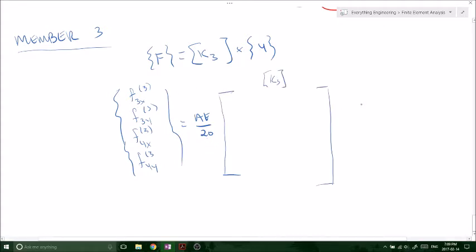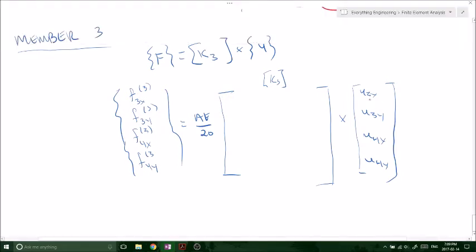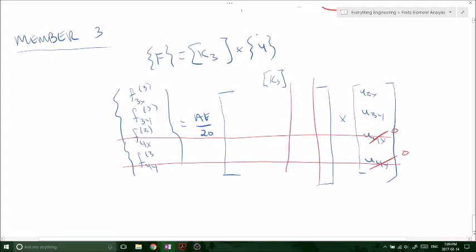A 3 matrix times U3X, U3Y, U4X, U4Y. So if you remember again, node number 4 is a fixed support. So that is 0, that is 0. And as such, we can cross this out again, cross this out, cross this out, and cross this out. So now we're just dealing with, again, a 2 by 2.